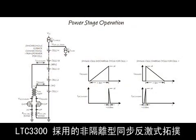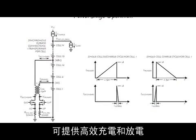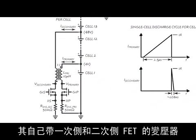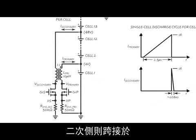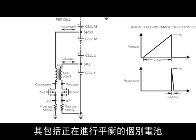The non-isolated synchronous flyback topology employed by the LTC3300 provides for high efficiency charging and discharging. Each of the six balancers requires its own transformer with primary and secondary side FETs. The primary side is connected across the cell to be balanced, and the secondary side is connected across a group of 12 adjacent cells, which includes the individual cell being balanced.